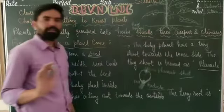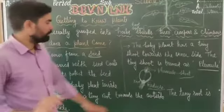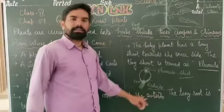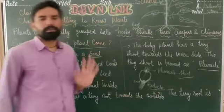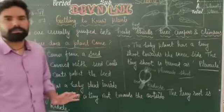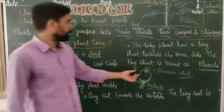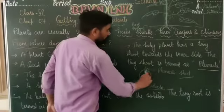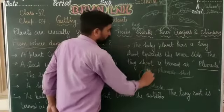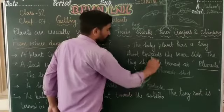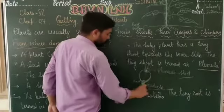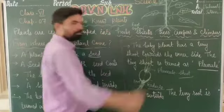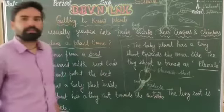Plumule shoot बनाता है और radicle root बनाता है। Plants में जब favorable conditions आती हैं तो shoot ऊपर की तरफ move करता है और roots नीचे की तरफ move करती हैं।